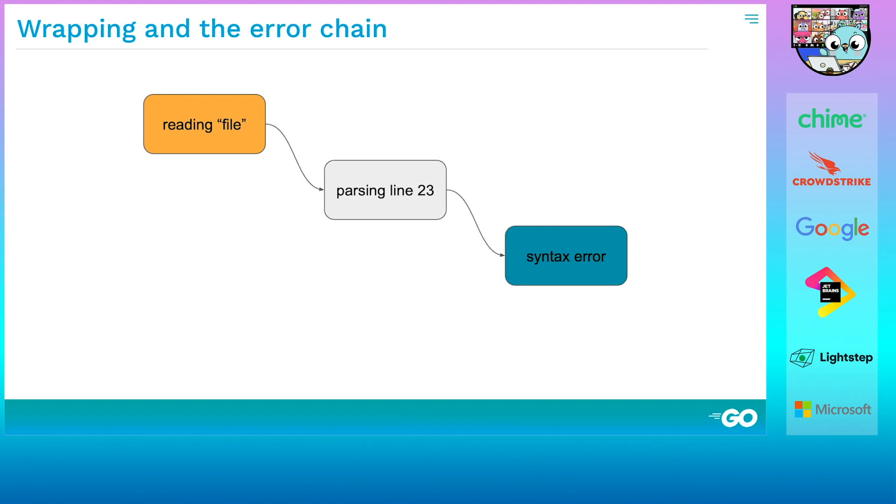The idea of error wrapping is that one error can contain another, forming what we'd like to call the error chain. An error chain is a linked list of errors. Each error in the chain adds some information to the original error, the one at the end of the chain. This is more than just concatenating error messages into a string. With wrapping, you can get the concatenated string, but you also hold on to the errors themselves, so programs can inspect them.